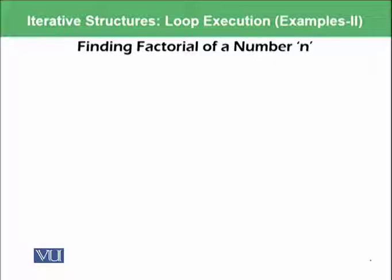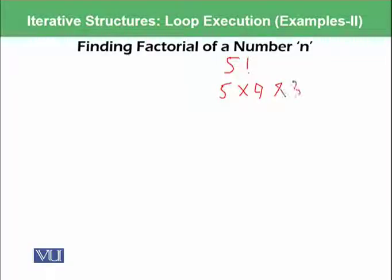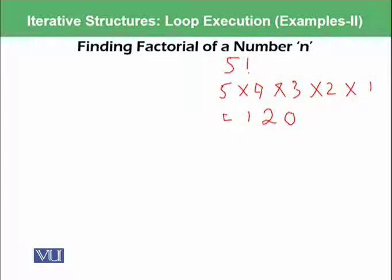When we say factorial, what does it mean? For example, if you want to calculate the factorial of 5, it means 5 into 4 into 3 into 2 into 1. All of this you need to calculate, which gives the factorial value of 120. You can see that there is a repetition starting from 1 on the right side and going towards the number on the left side, and we are always multiplying the previous result by the current value of the iteration.